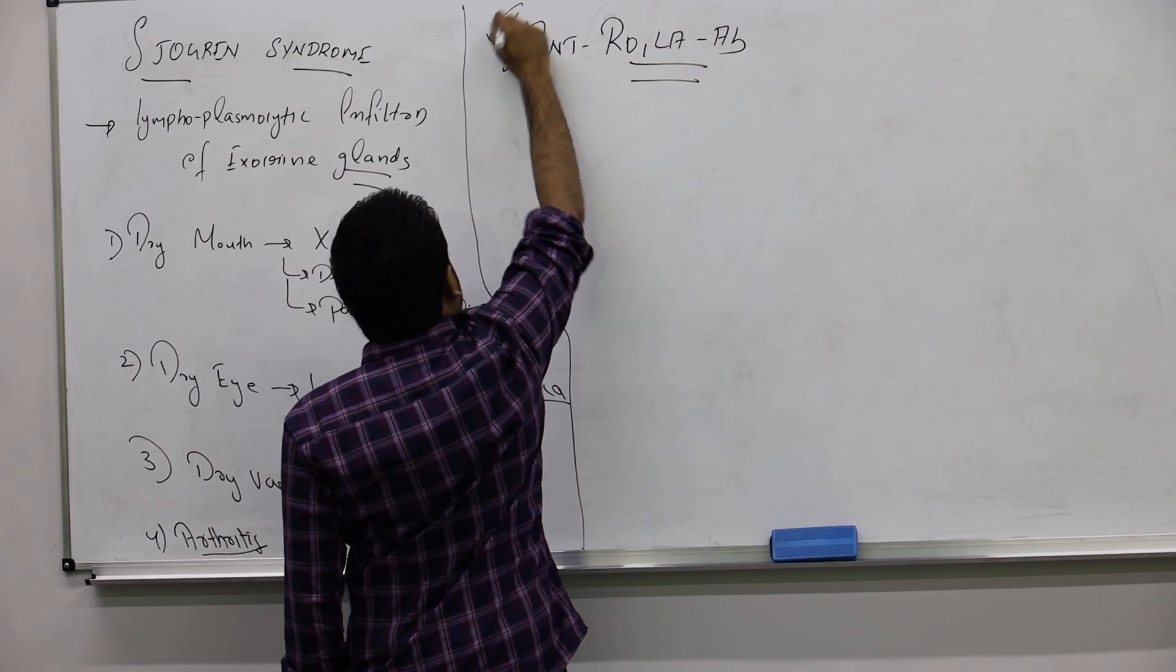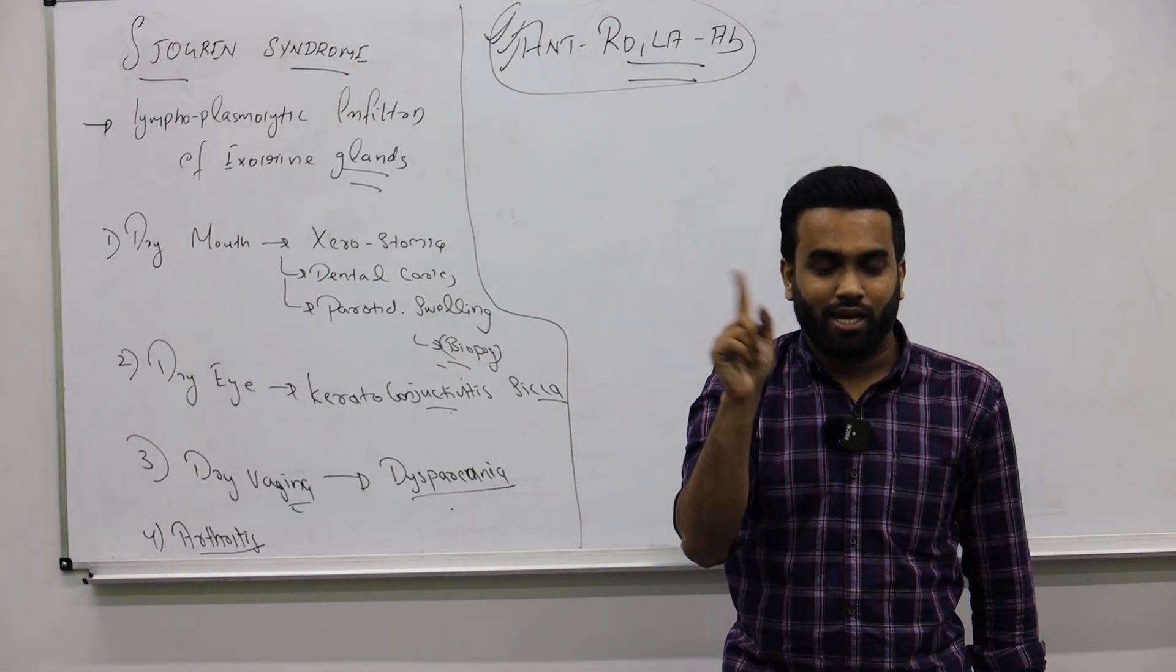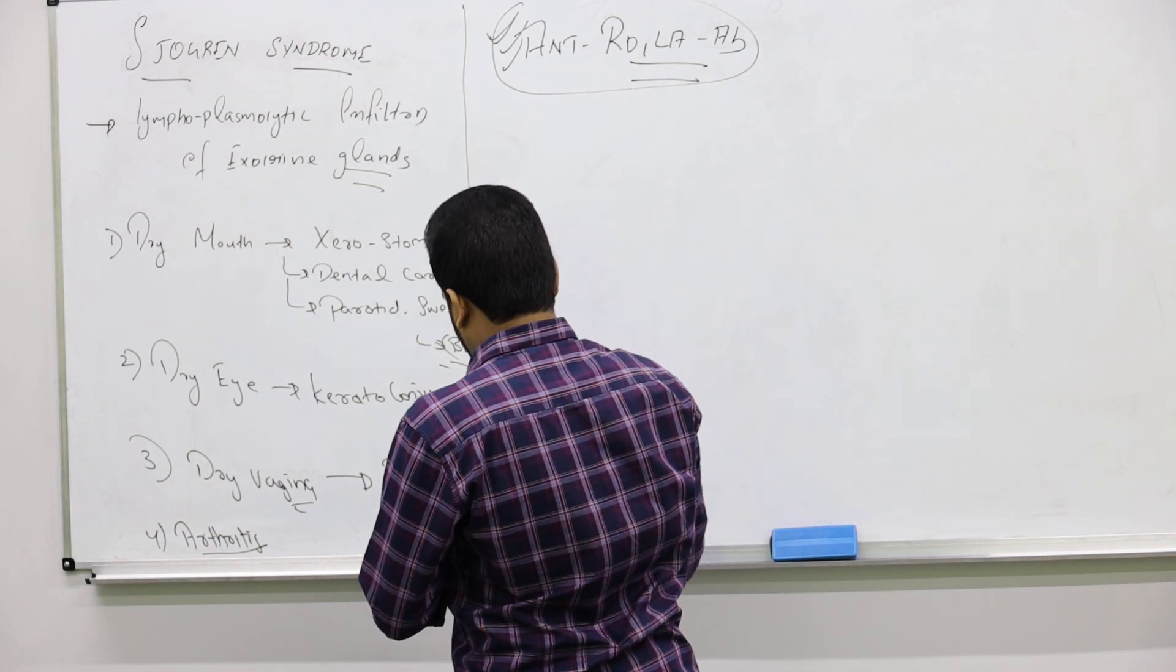The best diagnosing, you can find this Ro, La. If you are from India, you know ro means don't, ro cry, la means do, Ro La for Sjogren's syndrome. Remember like that.